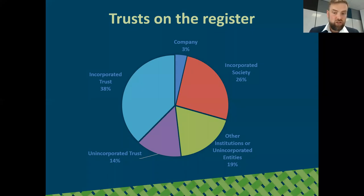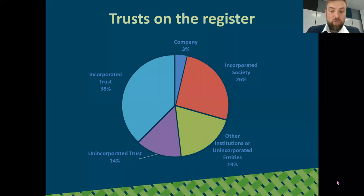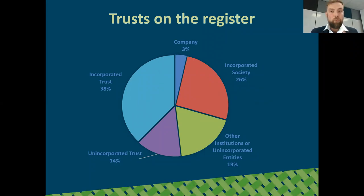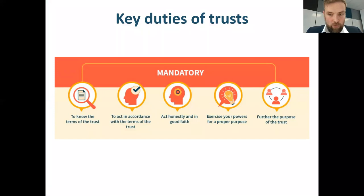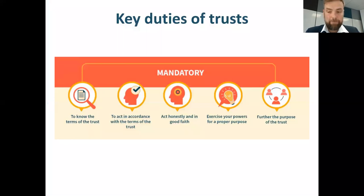Incorporating as a trust board under the Charitable Trust Act 1957 is an important step if trusts want to apply for funding, as a lot of funders require an incorporated structure. It also limits your liability as individual trustees. Trustees for both forms have certain duties set by court decisions. The Trusts Act 2019 hasn't changed these fundamental duties but has clarified certain things that charities need to be aware of. The most important duty for trustees is loyalty to the trust — your charitable purpose must guide all trustee decision making, from minor to major decisions.